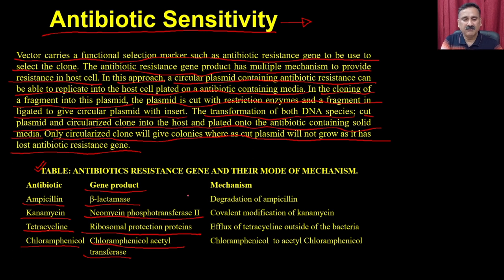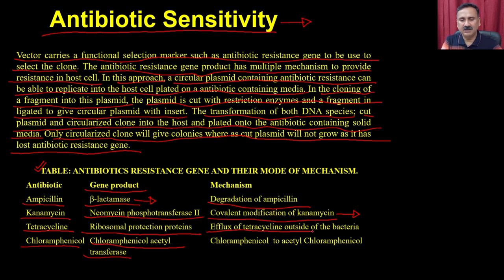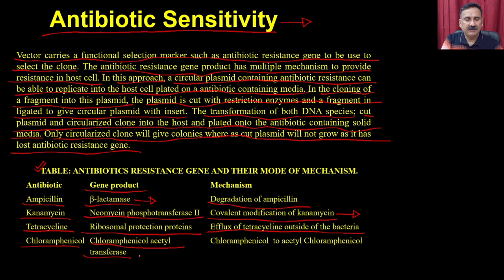The mechanism: in the case of beta-lactamase, it degrades ampicillin. Neomycin phosphoryltransferase makes a covalent modification of kanamycin, so it cannot exert its action. Ribosomal protection protein causes efflux of tetracycline outside the bacteria, preventing it from interfering with protein synthesis. Similarly, the CAT gene acetylates chloramphenicol to acetylchloramphenicol, interfering with the action of chloramphenicol.